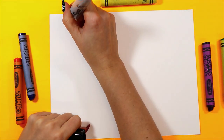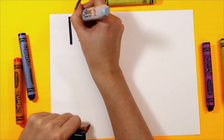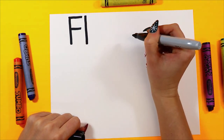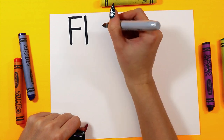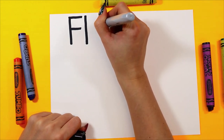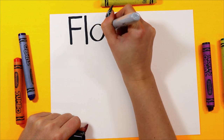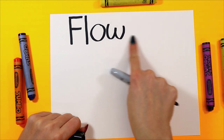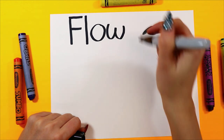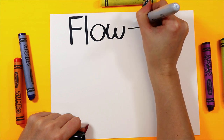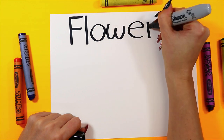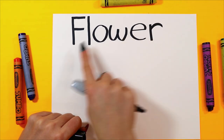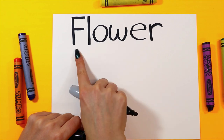Let's spell the word flower. First we have a letter F. Then a lowercase letter L. F-L-O-W. Make an 'ow' sound. O-W. F-L-O-W, and then the R. I hear an R sound at the end. E-R. Make an R sound. Flower, flower, flower. Good job.